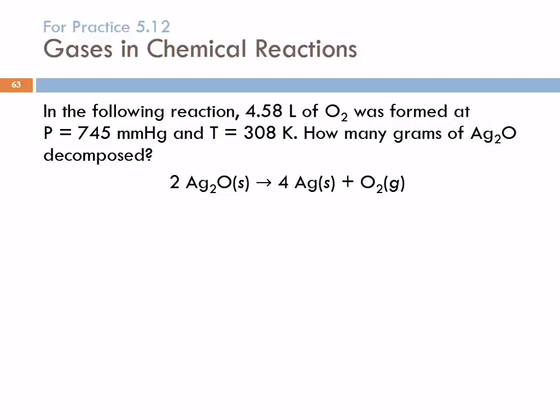Let's do an example. In the following reaction, 4.58 liters of oxygen was formed at a pressure of 745 millimeters of mercury, and temperature is equal to 308 Kelvin. How many grams of silver oxide decomposed? First, we read through the problem. We're given the balanced chemical equation. I'm going to use that equation to organize these numbers, and then we'll figure out what we need to do.